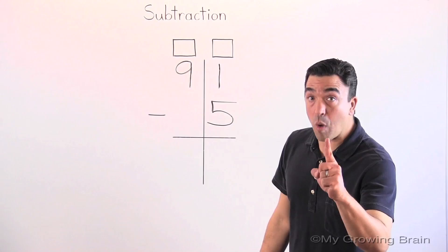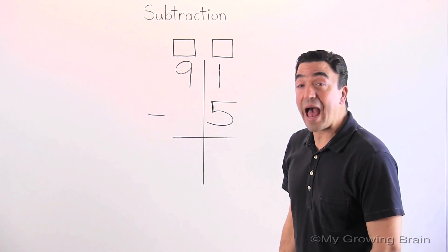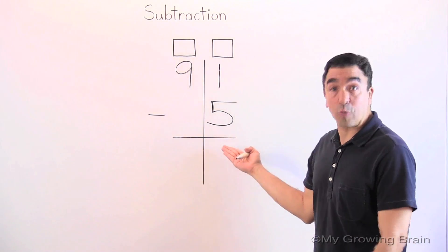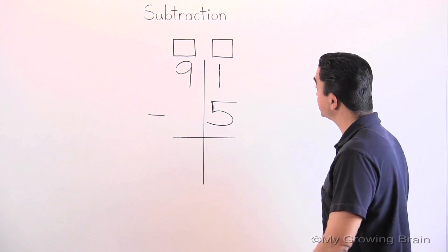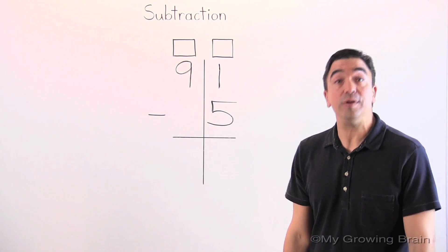Let's start in the ones place. Before we subtract, let's see if we need to regroup. Is the top number greater than the bottom number? No, it's not. Therefore, we do need to regroup.